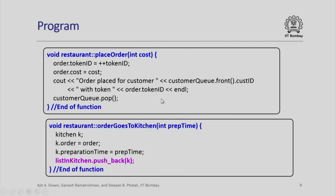Next I have the function order_goes_to_kitchen. In order_goes_to_kitchen, what we are doing is we set k.order to order and k.preparation_time to prep_time. Now we push_back this k into list_in_kitchen. This is the key difference because now we are dealing with a list and not with an array.